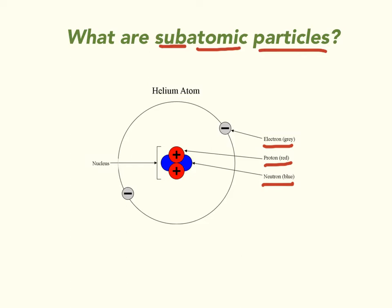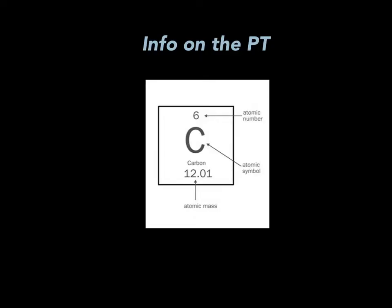Each atom on the periodic table contains subatomic particles. What makes them different is how many of each of those particles they have. When you look at your periodic table, you can get some good information about the subatomic particles. This is an example of carbon from the periodic table. We have a number up on top — this is the atomic number. The atomic number is very important because the atomic number always equals the number of protons (P+). In many cases, it also equals the number of electrons.